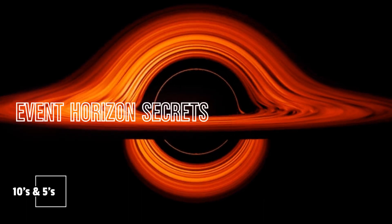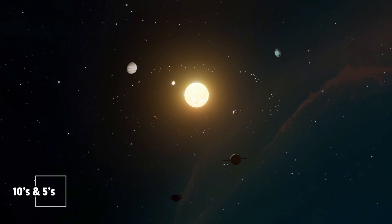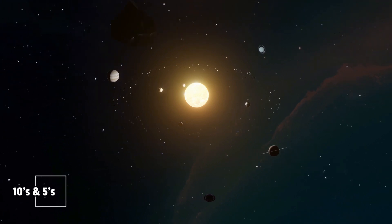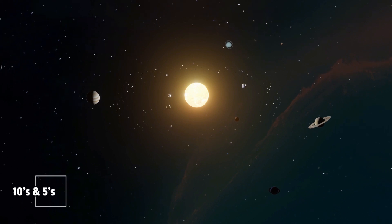Number 1. Event Horizon Secrets. The event horizon of a black hole is a boundary beyond which nothing, not even light, can escape. One perplexing mystery is what transpires at this point of no return.